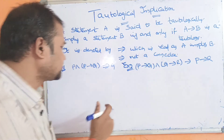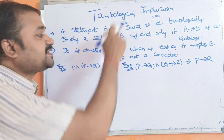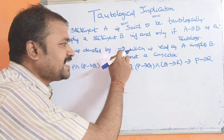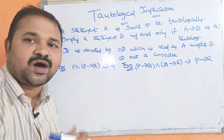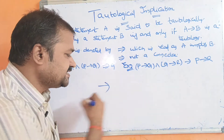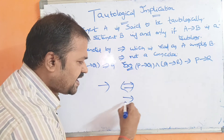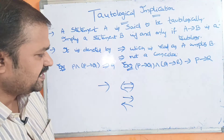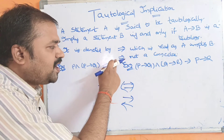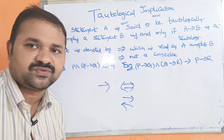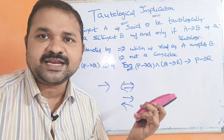Let us solve two examples. The first example is P ∧ (P→Q) ⟹ Q. The tautological implication symbol is denoted by '=>' (right angle bracket only), which reads as A implies B. This is not a connective — unlike the implication connective or the biconditional connective. The tautological implication symbol contains only the right angle bracket, with no left angle bracket.